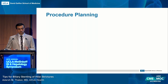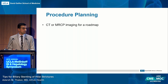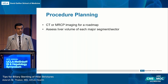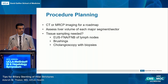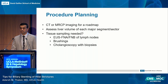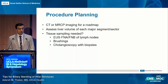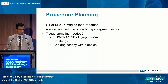If you know it's not going to be surgical, in terms of procedure planning I would generally recommend cross-sectional imaging — either CT scan or MRI — to get a roadmap of what ducts you may want to stent during your ERCP. Beyond that, cross-sectional imaging allows you to assess liver volume, thinking about different segments or sectors rather than just left and right. If it's the index procedure, have a strategy to get tissue for diagnosis. Options include EUS-FNA of nearby lymph nodes, brushings during ERCP, or cholangioscopy with direct biopsies, which is my favorite approach whenever possible.